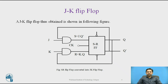The flip-flop is constructed such that output Q is ANDed with K and the clock pulse. This arrangement ensures the flip-flop is cleared during a clock pulse only if Q was previously 1. Similarly, Q-bar is ANDed with J and the clock pulse, so the flip-flop is set during the clock pulse only if Q-complement was previously 1.